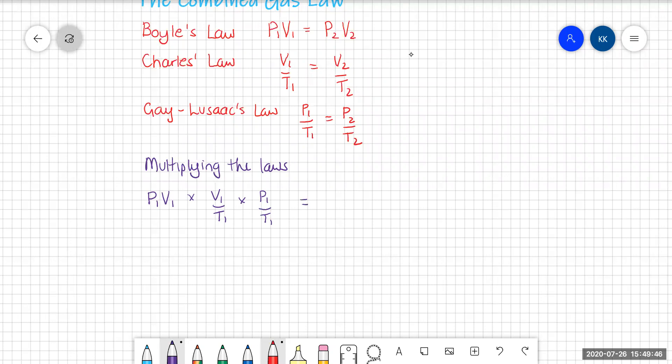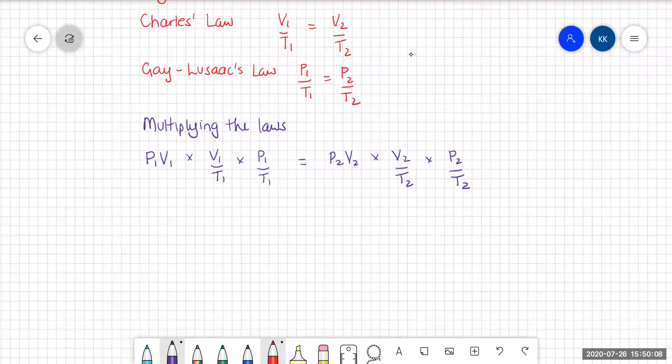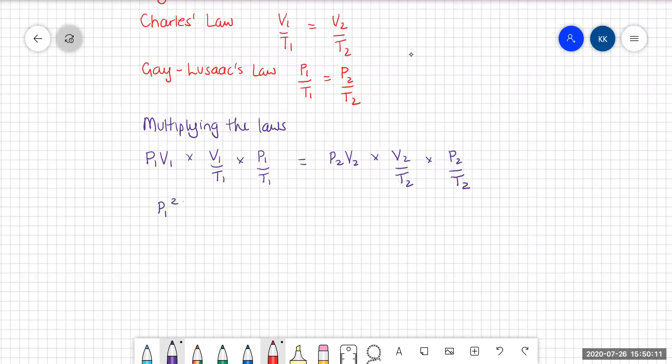Then because P1V1 is equal to P2V2, this must be equal to P2V2 times by V2 on T2 times by P2 on T2. And collecting up all of our terms, what we'll actually find is we have P1 squared V1 squared over T1 squared is equal to P2 squared V2 squared over T2 squared.